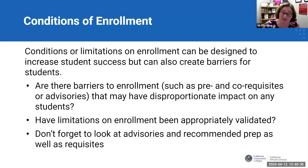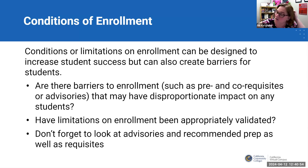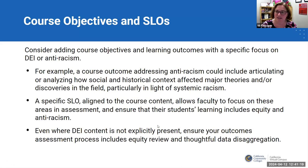On the question of validating limitations on enrollment: there are different ways to do that. You can use content review, mapping the objectives of the requisite course to show how they're needed to succeed. There's also statistical validation—colleges can look at numbers of students who pass without a prerequisite, compare before-and-after data when adding a new prerequisite, and revisit it after a few years to track outcomes.